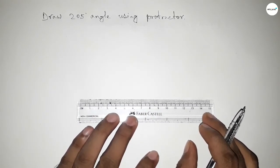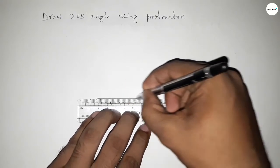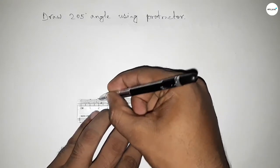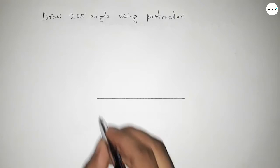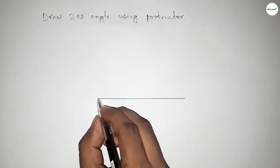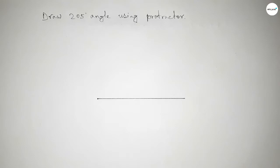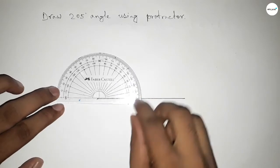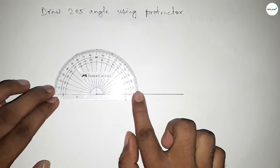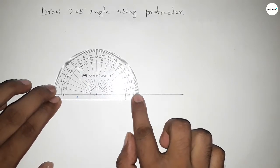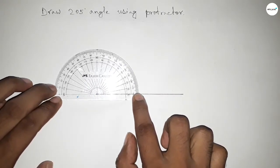Drawing here a line of any length. Okay, next pointing out here to draw 205 degree angle on this point. Now putting the protractor on the line perfectly.